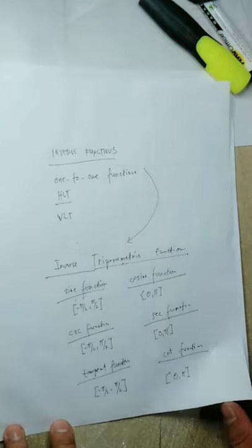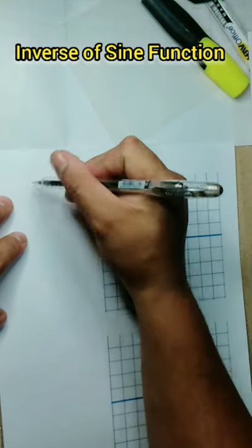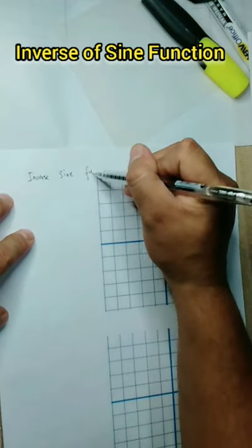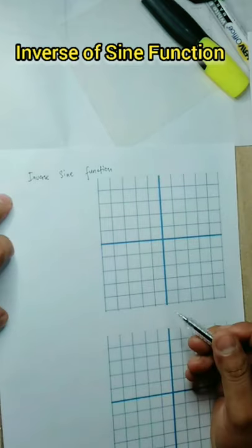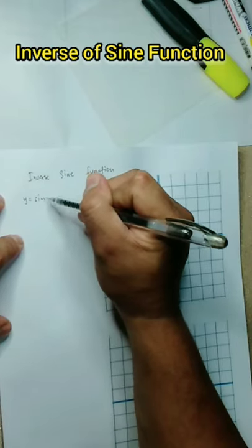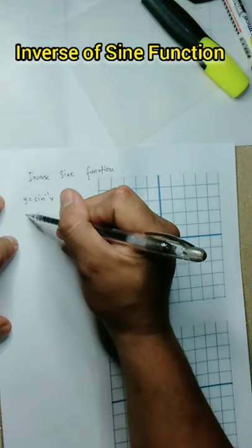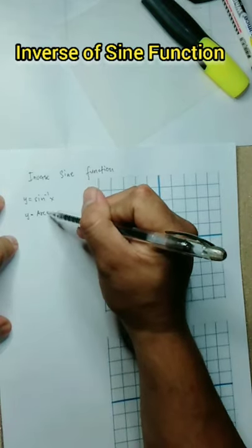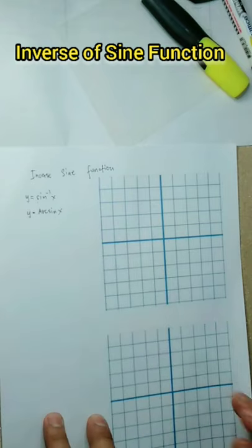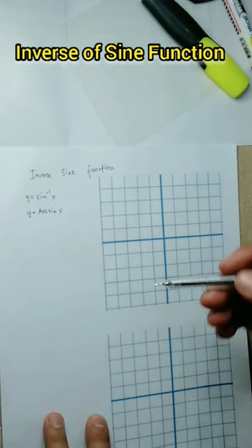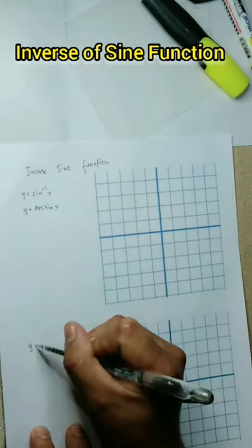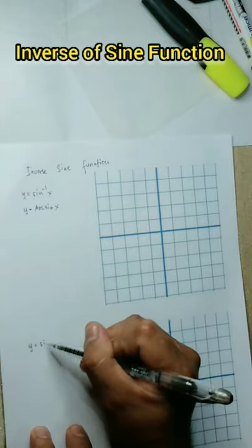Let's start with the inverse of sine function. We're going to graph the function y = inverse sine x. It can also be written in the form y = arcsin x — equal lang po yung dalawa. In graphing an inverse sine function, first, we are going to graph the sine function.